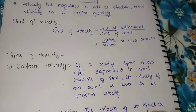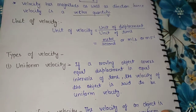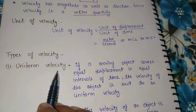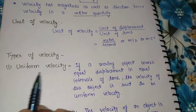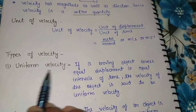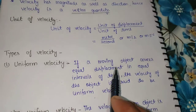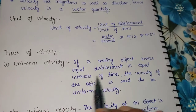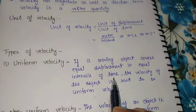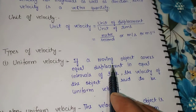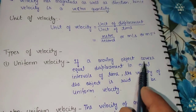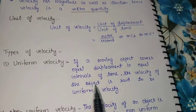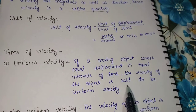If a moving object covers equal displacement in equal intervals of time, the velocity of the object is said to be uniform velocity. For example, if an object covers 10 meters of displacement in every 5 seconds consistently, that is uniform velocity.